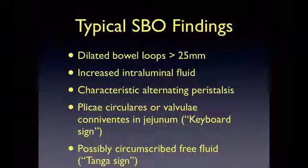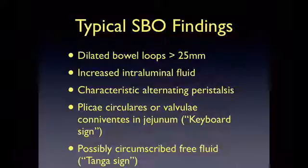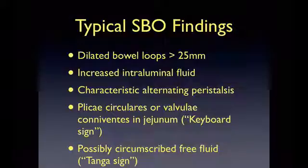The findings typical of SBO are dilated bowel loops greater than 25 mm, increased intraluminal fluid appearing anechoic or containing small hyperechoic reflections, peristalsis which is initially increased and then decreased or absent later in the course of the SBO, and the characteristic to-and-fro movement of intraluminal contents as they attempt to move past the obstruction. The keyboard sign of valvula connivans in the jejunum occurs when the valvula connivans, also known as plica circularis, become dilated in a fixed loop of bowel and take on a keyboard-like appearance when scanned in the longitudinal orientation. You may also see circumscribed free fluid between dilated bowel loops, typically forming a triangular shape, also known as the tanga sign.